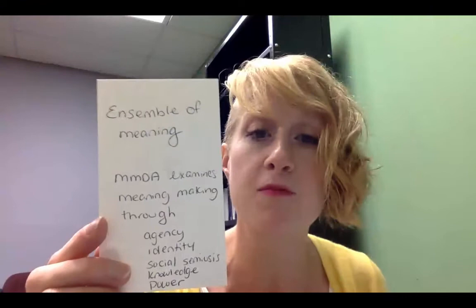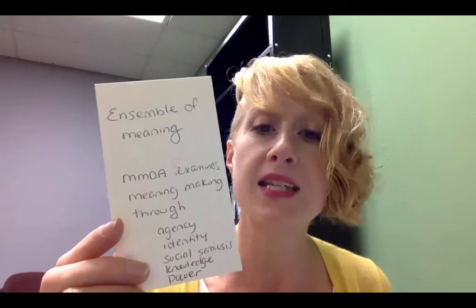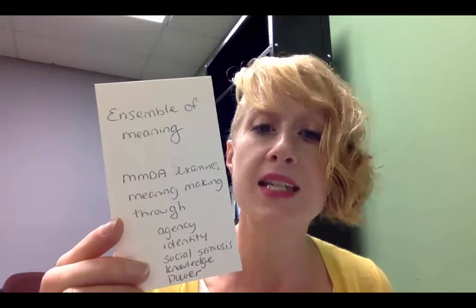From the text, Kress is saying that we put these modes together in an ensemble of meaning. This idea of meaning-making is really important to Kress. He says that we make meaning through agency, identity, social semiosis, knowledge, and power. For knowledge, he uses the term epistemology — the study of how knowledge is made. What he's saying is that we make knowledge through social interactions, through the agency we have to accept another's ideas, the identity of both us and the speaker, and the power that the speaker might have over us.